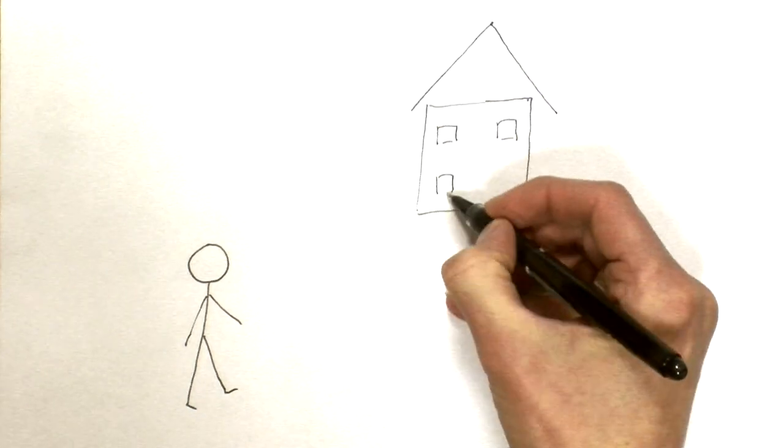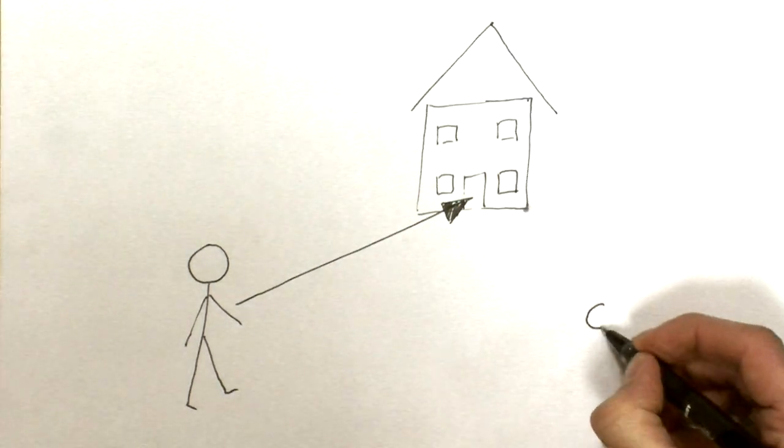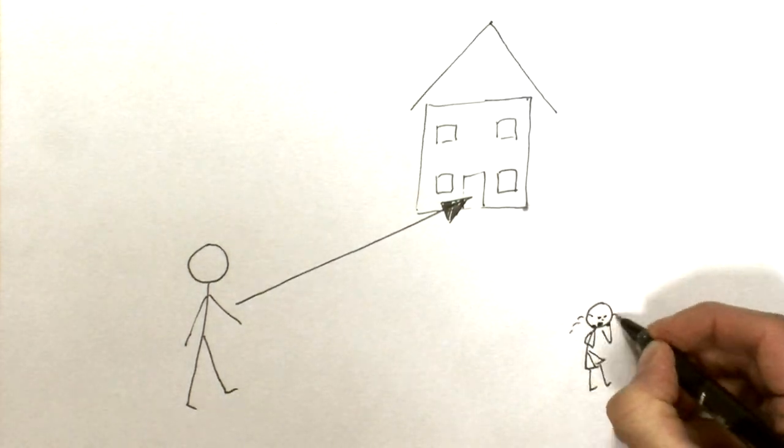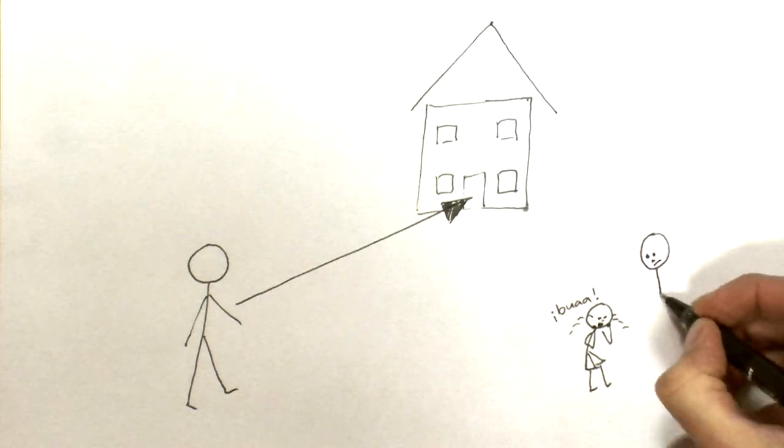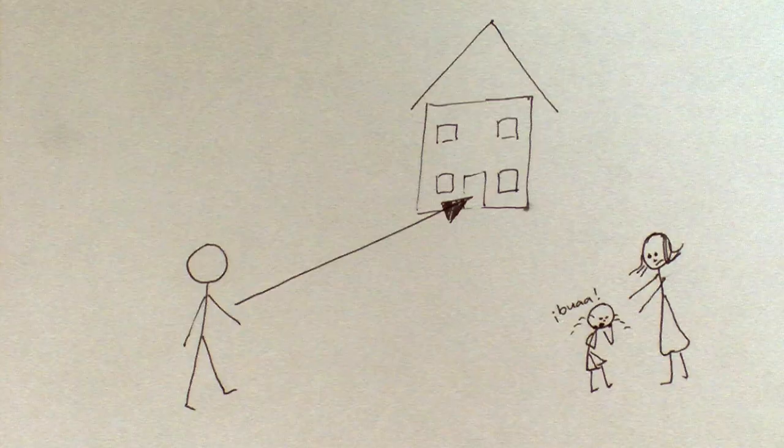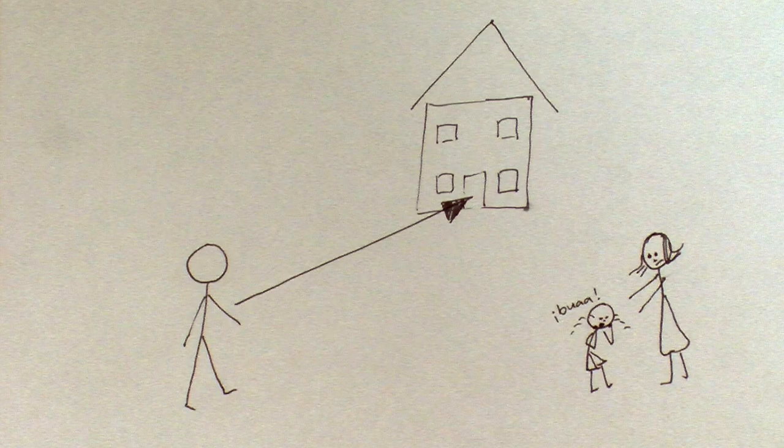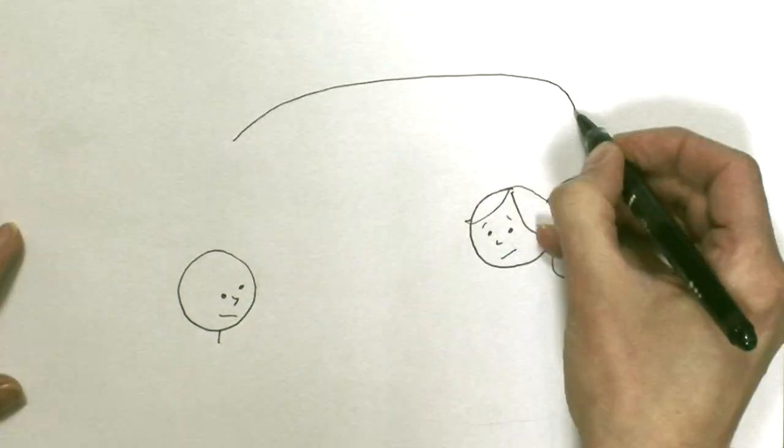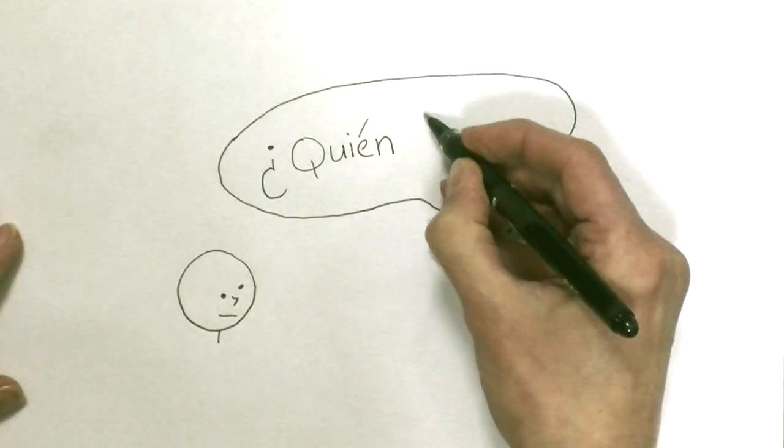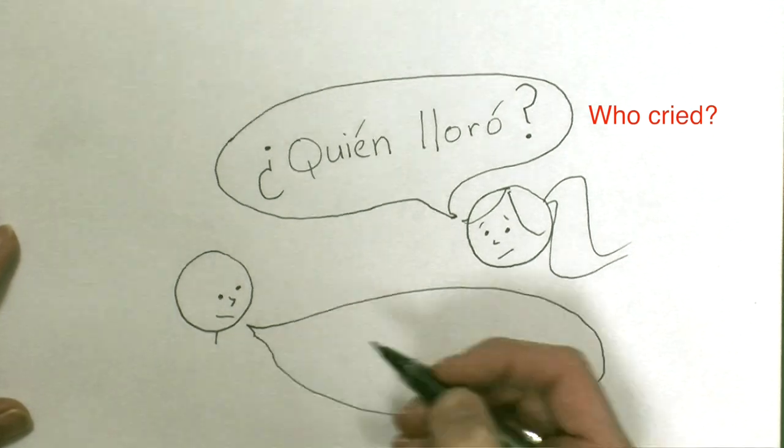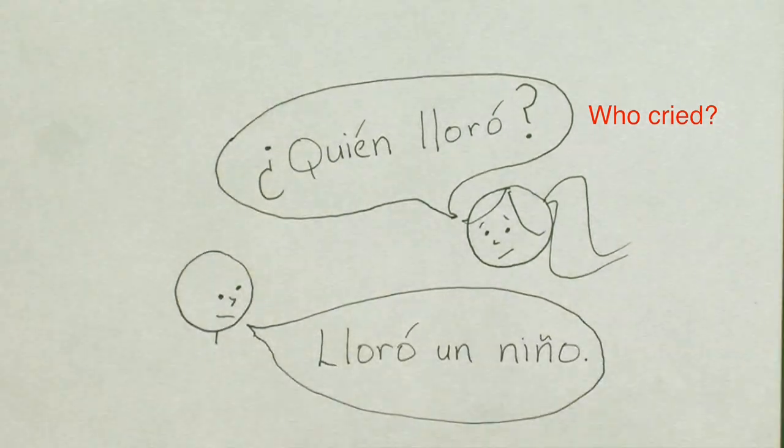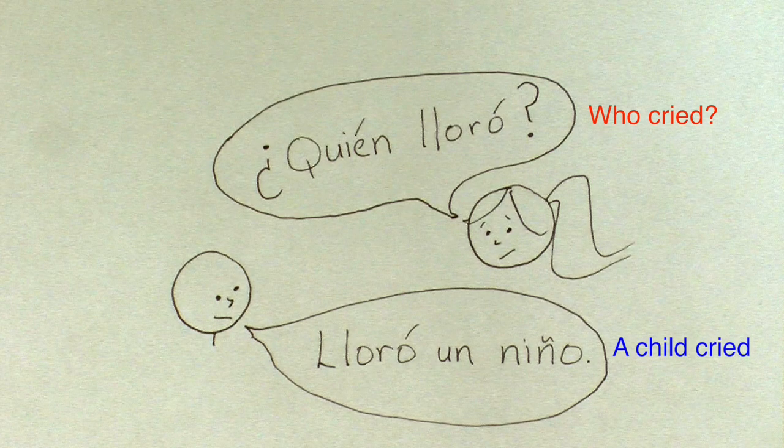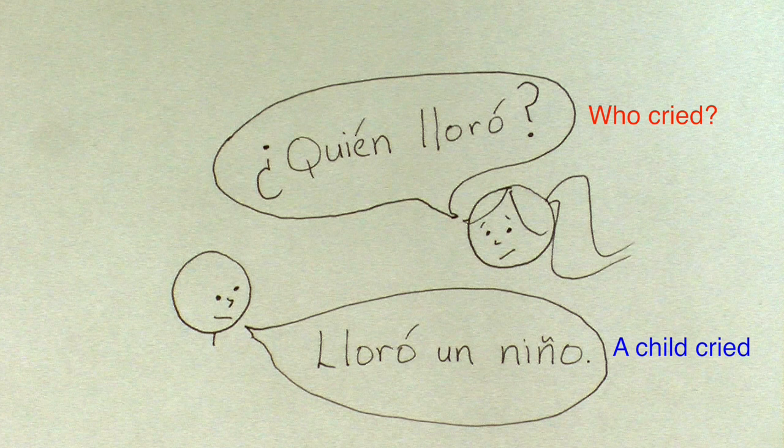Now, imagine a slightly different situation where you are walking home, and near your house you see a child fall over and start to cry. You move to help, but his mother gets there first, and soon he stops crying. You go into your house, and your friend who heard the crying asks, ¿Quién lloró? This time, you need to talk about the person who was crying in order to answer the question, so you use the verb-subject order, which puts the person who was crying in the focus position at the end of the sentence. Lloró un niño.